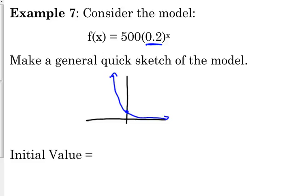The initial value. The initial value of this. This means when we plug in 0, what do we get? So, when we plug in 0, we've got 500 times 0.2 to the 0. What do we learn today?